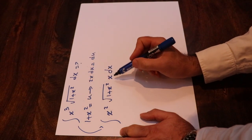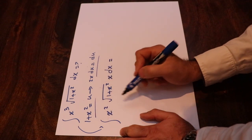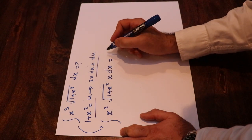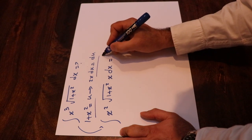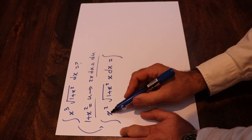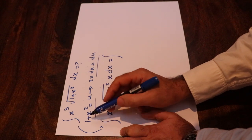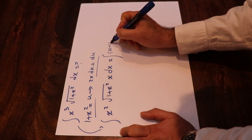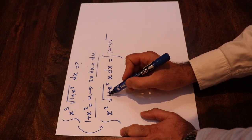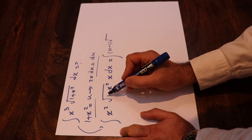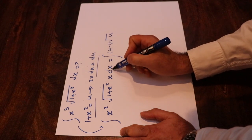So now you can basically substitute these two expressions into this integral. That will be equal to the integral of, instead of x², I simply write u minus 1. So (u minus 1) times the square root of 1 + x², and instead of 1 + x², I write u, times x dx.